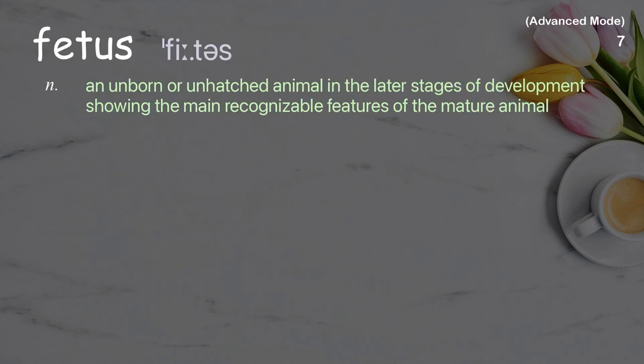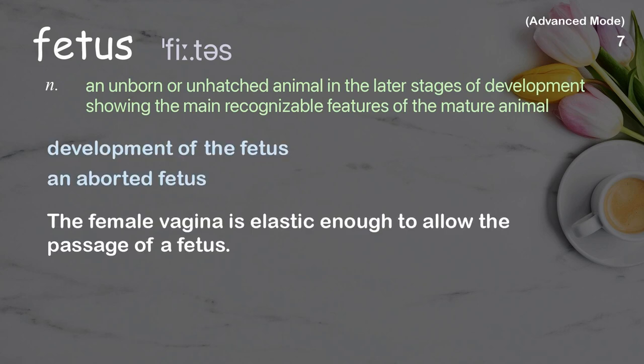Fetus: an unborn or unhatched animal in the later stages of development showing the main recognizable features of the mature animal. Examples: development of the fetus; an aborted fetus. The female vagina is elastic enough to allow the passage of a fetus.